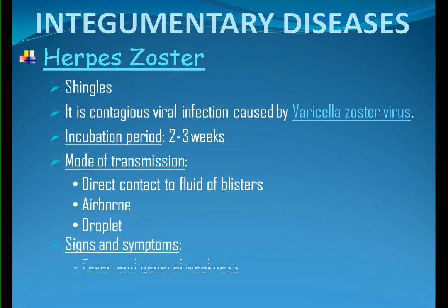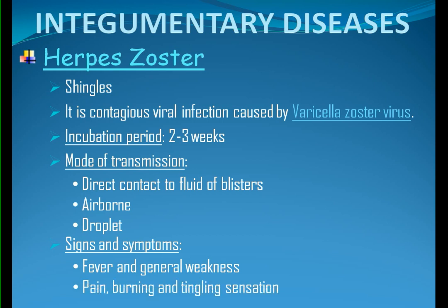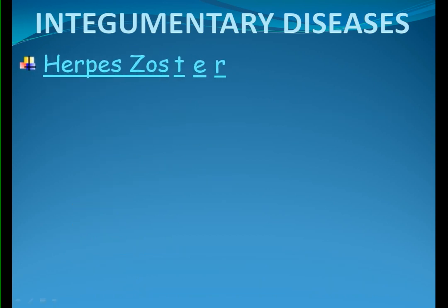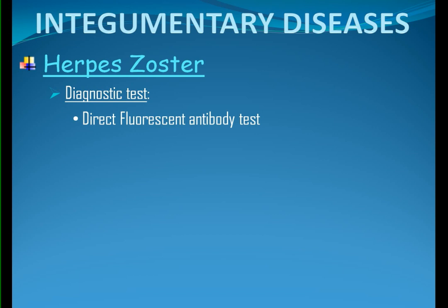Signs and symptoms: fever and general weakness are early manifestations of shingles. Pain, burning, and tingling sensation. Skin rash that is usually localized to one side of the body. Fluid-filled blisters. Diagnostic test: direct fluorescent antibody test, used to detect the presence of a particular antigen. Polymerase chain reaction (PCR) is the most useful test to confirm a suspected case of herpes zoster.